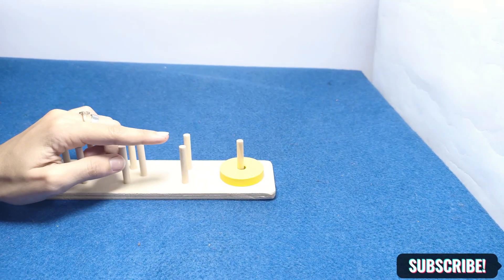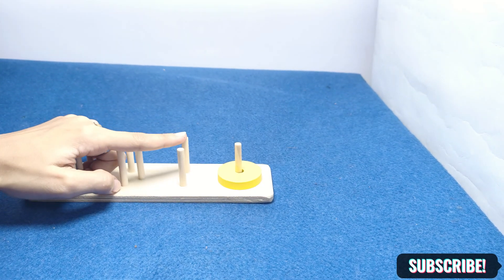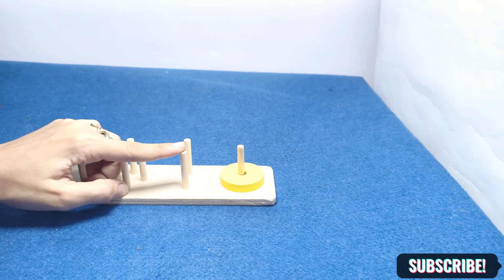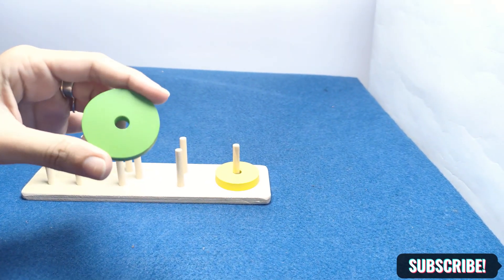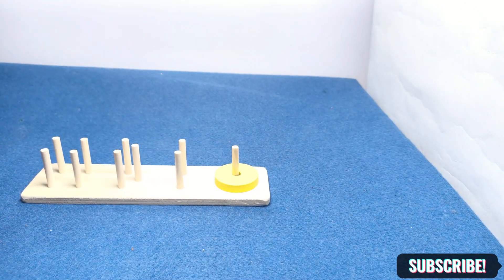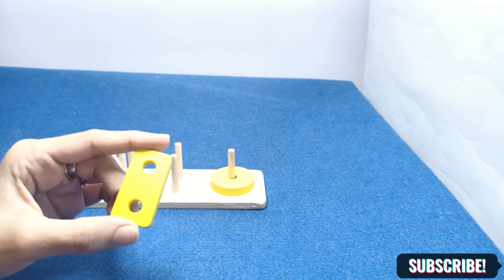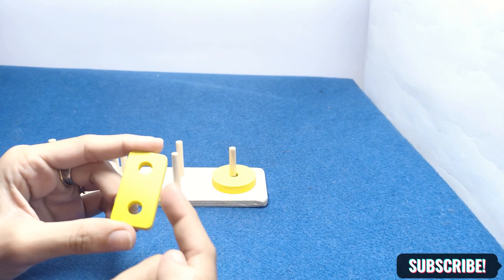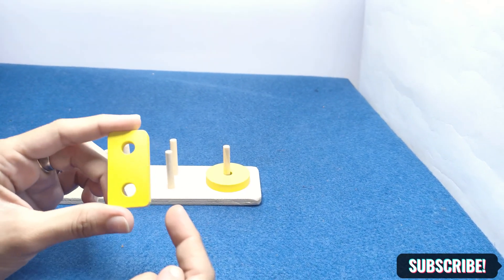Now what's the next? Which shape has two holes? One, two. Which shape is this? Circle? No, circle has only one hole in the shape. It's rectangle. Rectangle has one, two, two holes in it, so it's a yellow rectangle.